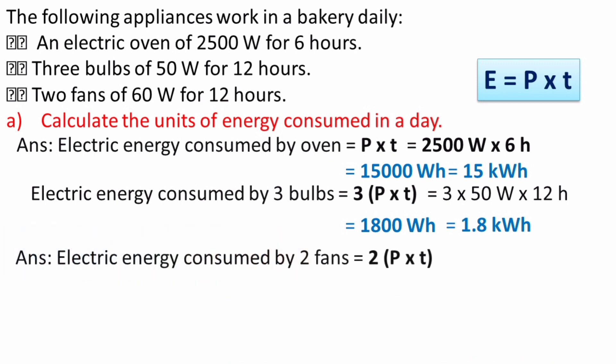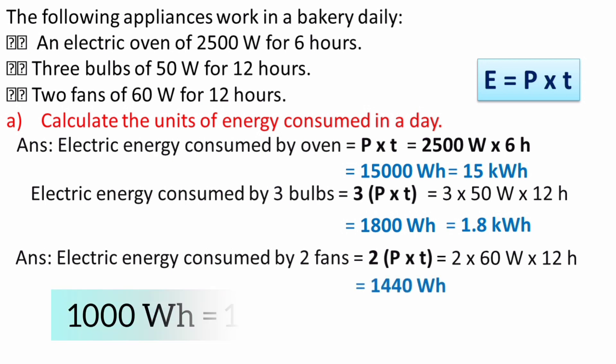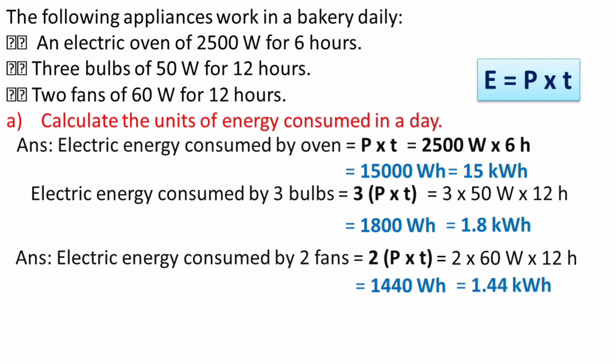Now let's find the electric energy consumed by 2 fans. In the formula P × T, we multiply by 2 because there are 2 fans, so it becomes 2 × P × T. Substituting the values: 2 × 60 × 12 = 1440 watt hour. Converting to kilowatt hour gives 1.44 kilowatt hour.